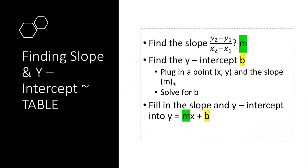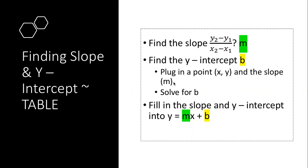We feel good with graphs. The next thing people struggled on were the tables — about 70% of people were getting those wrong on the test. Here are the steps: to find the slope, use y2 minus y1 over x2 minus x1. To find the Y-intercept, plug in an x, a y, and the slope, then solve for b. In the final equation, that x and y go away — you only fill in the M and the B.